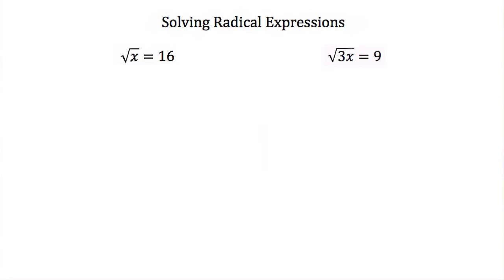If we wanted to solve this for values of x that make this true, we would have to get x alone on one side of the equal sign, except x is being square rooted. So how do we get x alone on one side?